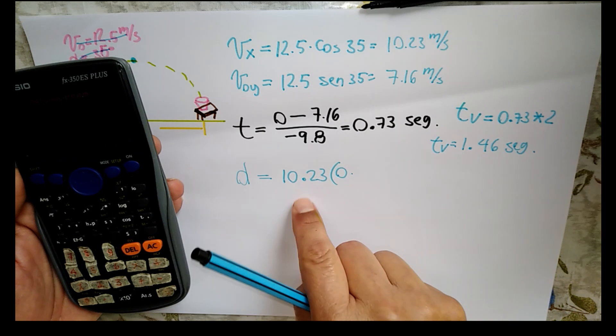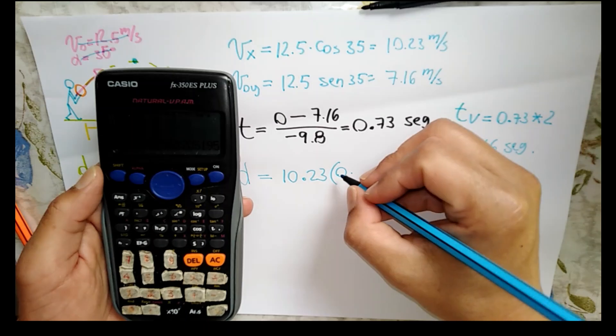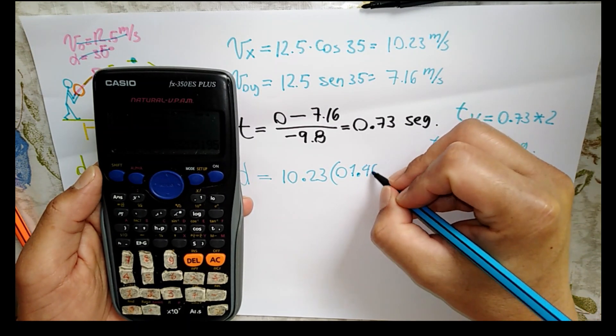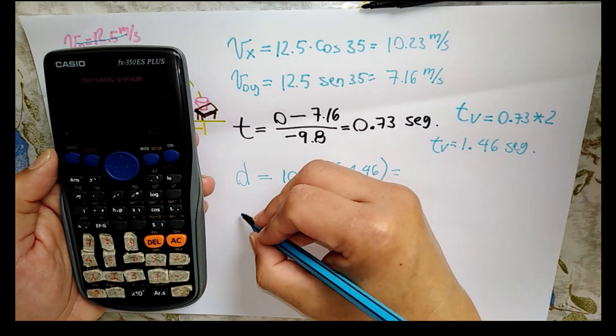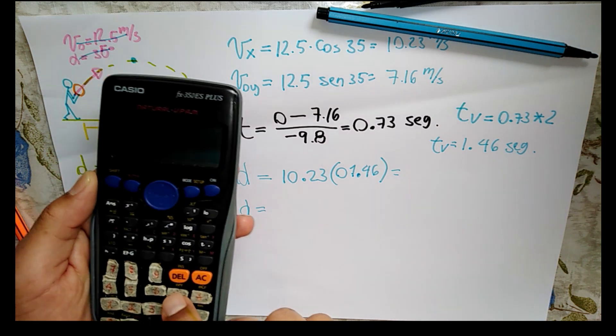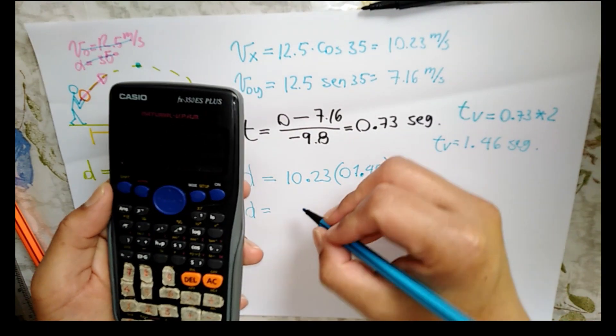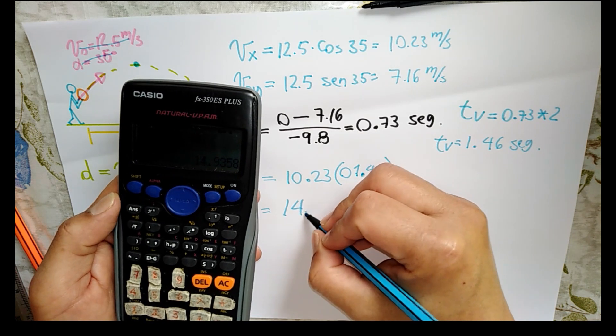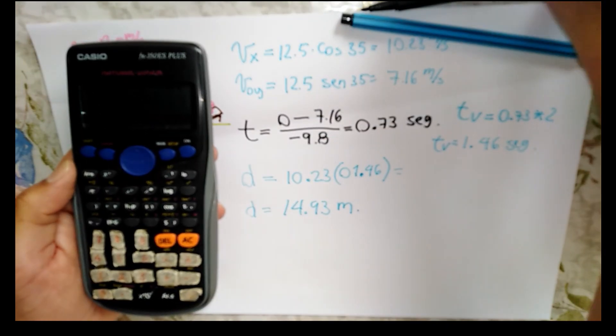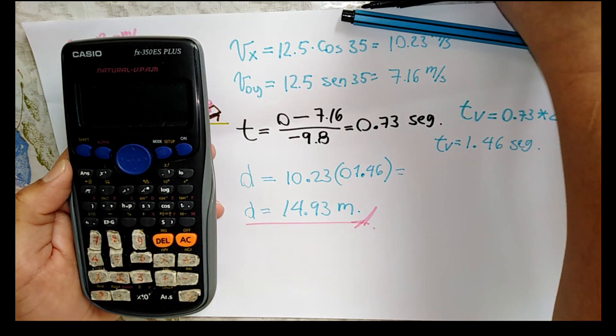Muy bien, entonces la distancia va a ser igual a la velocidad en X, que es 10.23 por el tiempo de vuelo, que es igual a 1.46. Entonces, 10.23 por 1.46 nos da una distancia de 14.93 metros. O sea, ya ustedes deciden si la pelota cayó en el punto indicado o le faltó algo. Gracias.